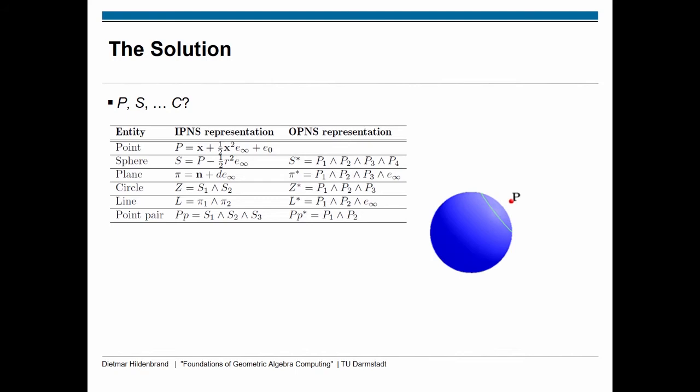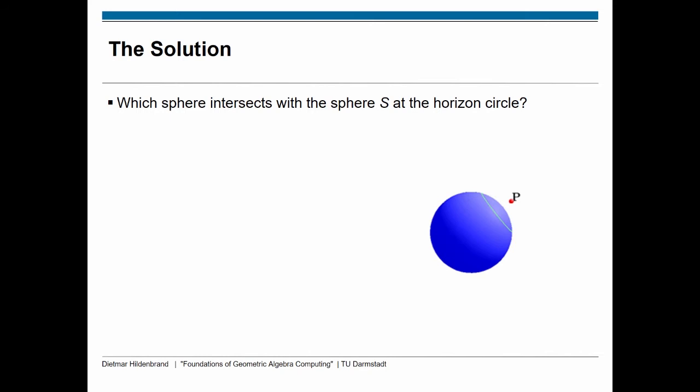The sphere can be computed based on the center point P minus half radius squared times E-infinity, or as the outer product of four points. The plane can be computed based on its normal vector and distance to the origin, or as the outer product of three points and E-zero. The circle is the outer product of two spheres or a sphere and a plane. A line is the intersection of two planes or two points with E-infinity. A point pair is the intersection of three spheres or the outer product of two points.